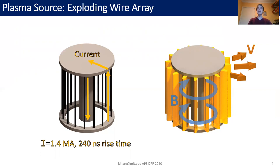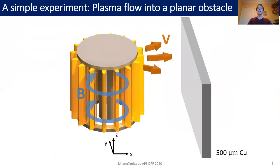In the experiments I'm going to show you today we had a very simple experimental geometry. We placed a planar conducting obstacle about 10 millimeters away from the wire array and we watched the plasma collide with this conducting obstacle.